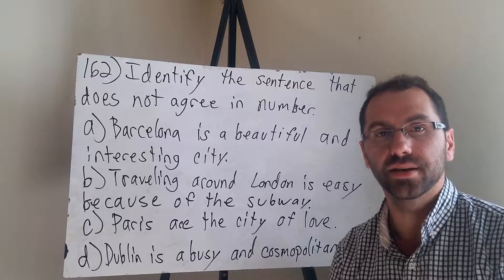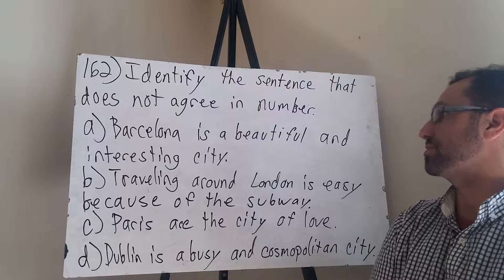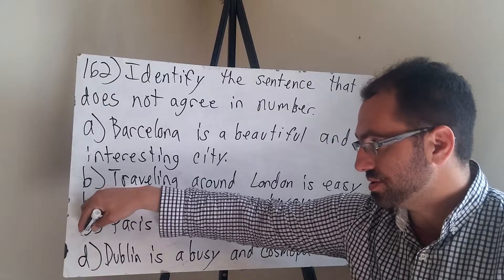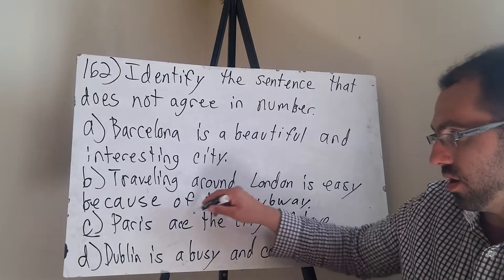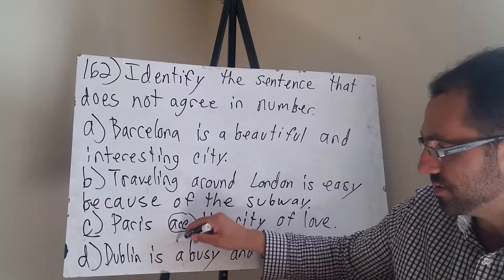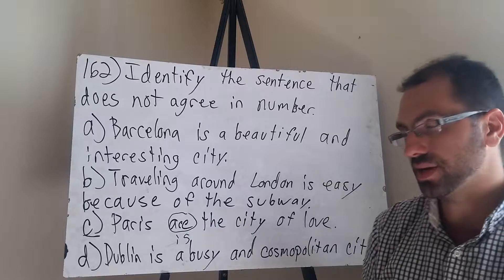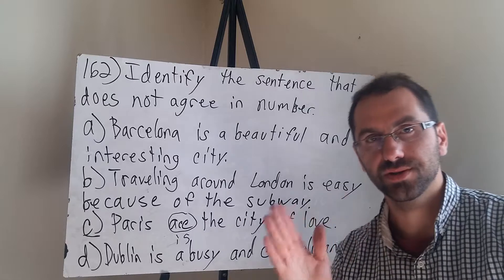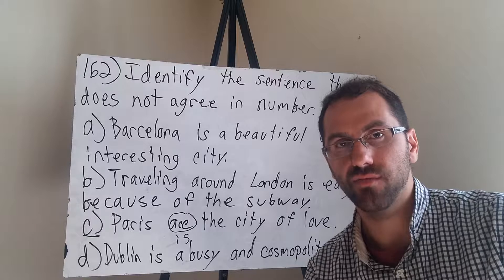Identify the sentence that does not agree in number. Choice A: Barcelona is a beautiful and interesting city. Choice B: Traveling around London is easy because of the subway. Choice C: Paris are the city of love. Or choice D: Dublin is a busy and cosmopolitan city.